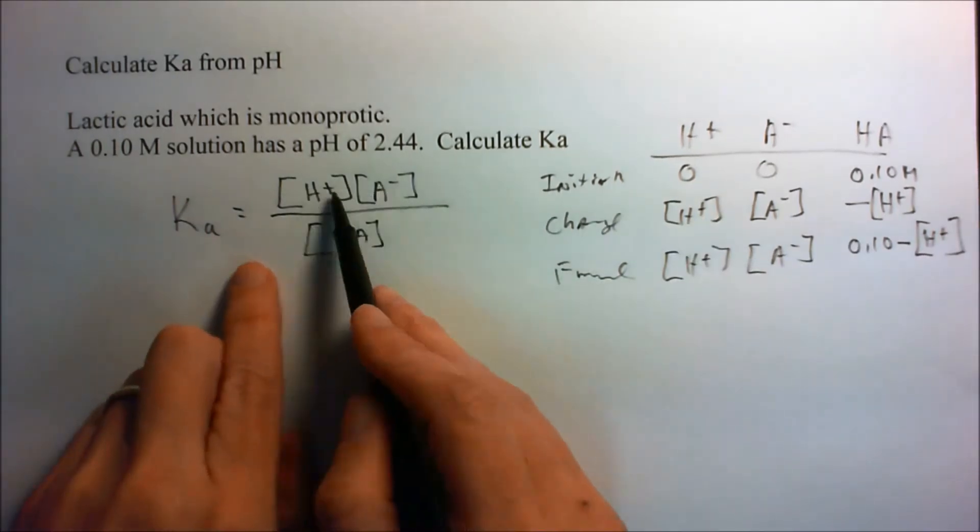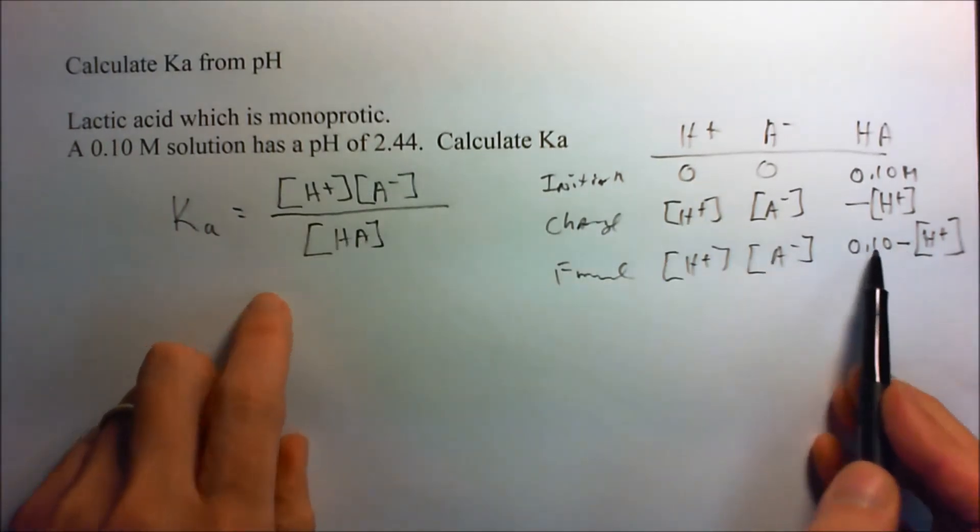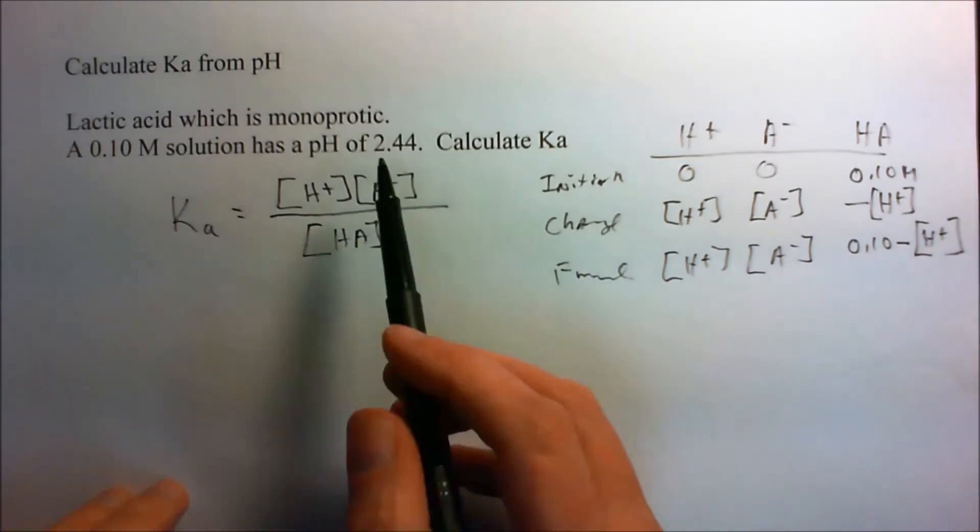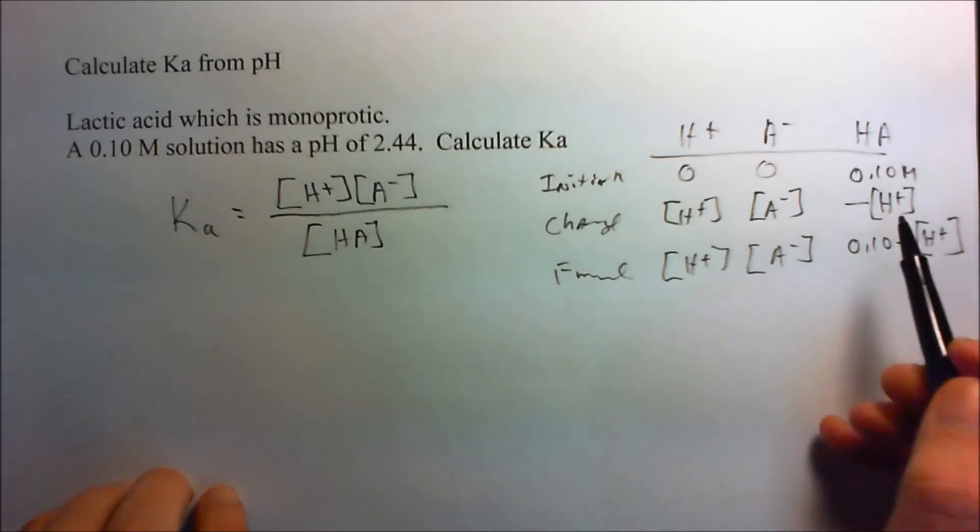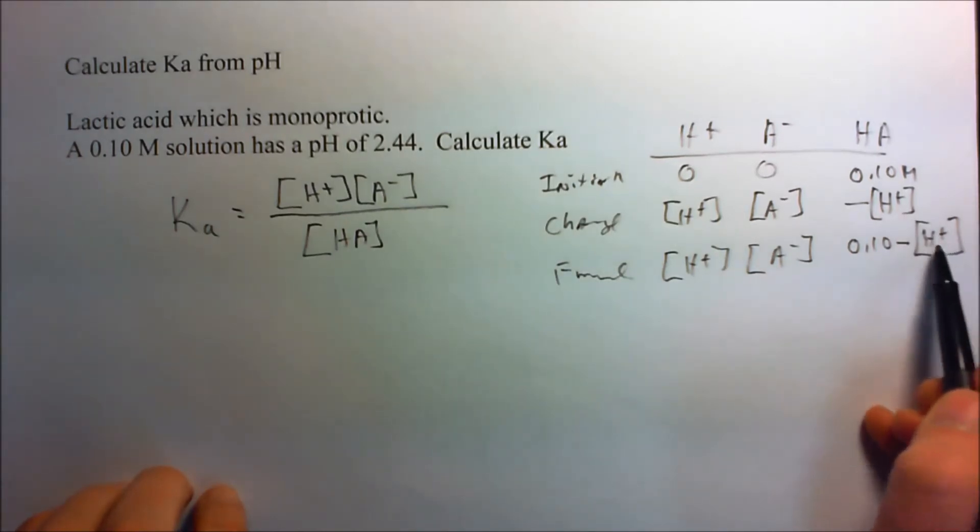And you can see the finals, they just plug in like that, and the final here is 0.100. Now, we're going to assume, since it's a weak acid, that this term right here is going to be very small compared to that number, and then we can just ignore it.